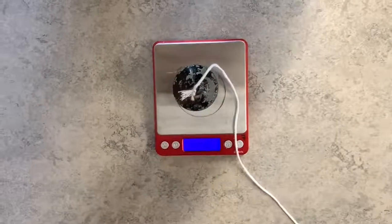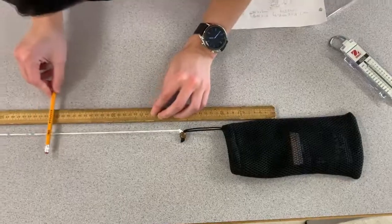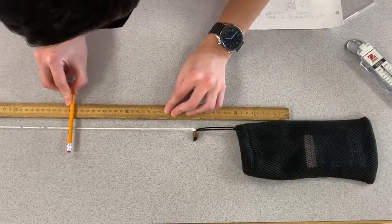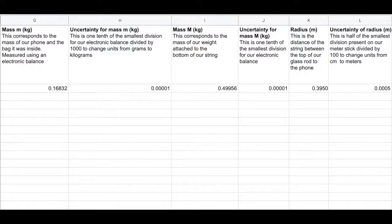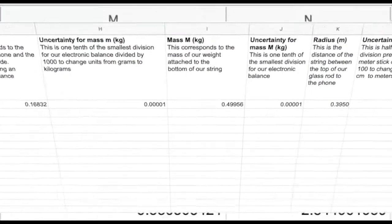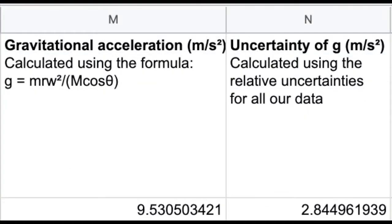The uncertainties for our measurements of mass and radius were based upon the smallest division of our scales and rulers, so plus or minus 0.00001 kg and plus or minus 0.0005 m. Finally, we put all our data into our original formula, and we end up with the value of gravity of 9.53 plus or minus 2.84 meters per second squared.